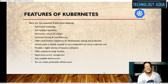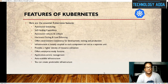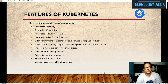Coming to the features of Kubernetes: automated scheduling is a really very good feature. Self-healing capabilities — if one container is down, it will allocate another container and automatically make sure it recovers and fixes the issues. Automated rollouts and rollbacks is also a very good feature. Horizontal scaling and load balancing — scaling is a main concept in deployment of applications, and load balancing is another really important feature which Kubernetes supports. It also offers environment consistency for development, testing, and production.